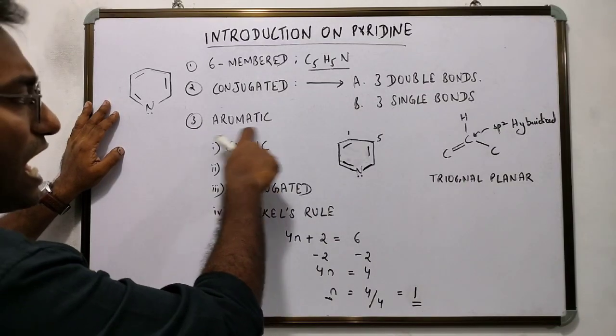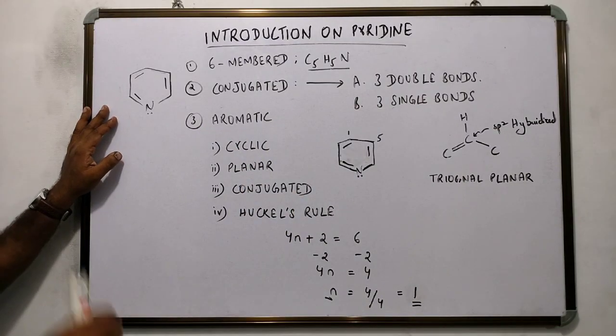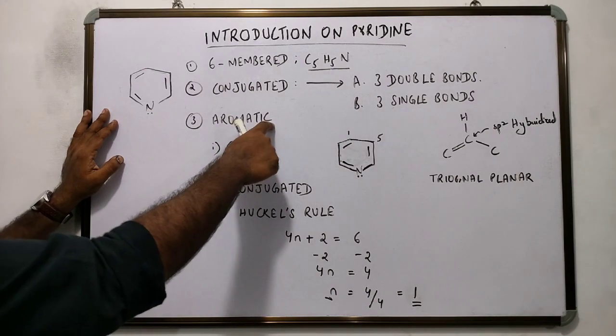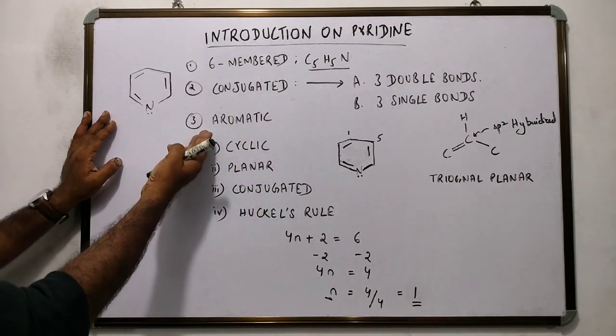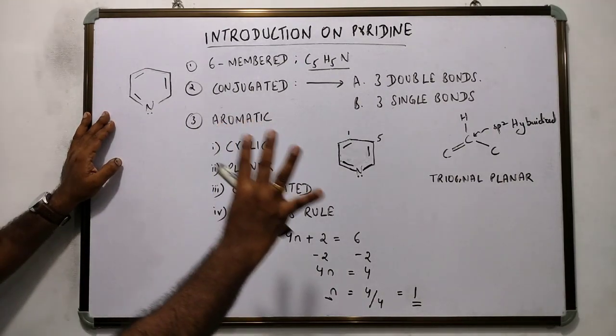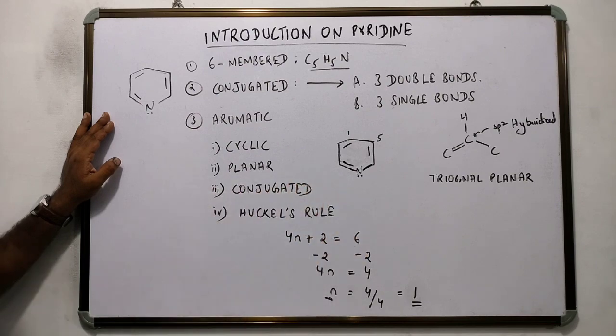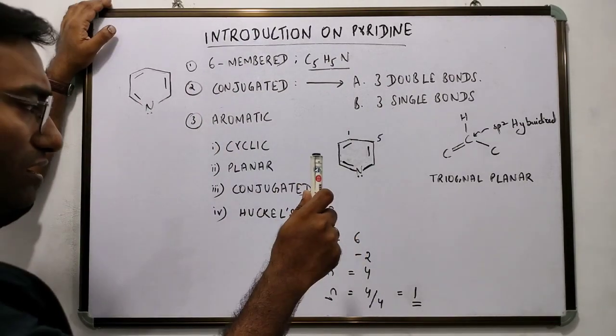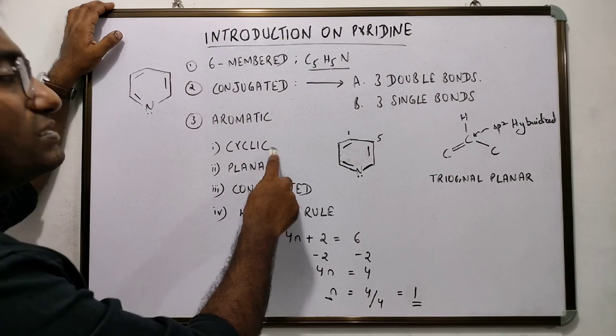Number 3. Pyridine is an aromatic compound. The reason pyridine is aromatic is because it fulfills the four conditions of aromaticity. Condition number 1: the molecule should be cyclic.